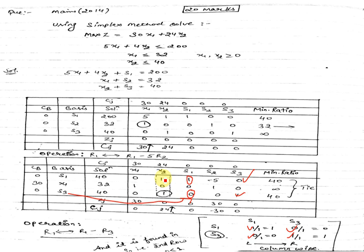The key column corresponding to S1 is 1. The corresponding values are: this is 1, this is 1, and this is 2. Now divide this S1 row by 1 — this complete S1 row by 1.